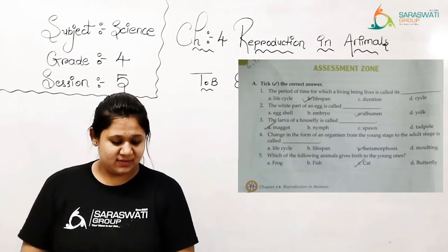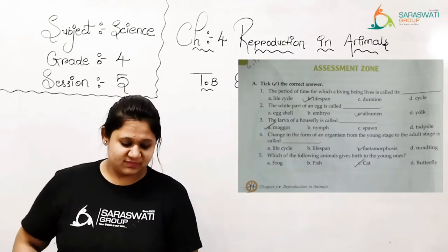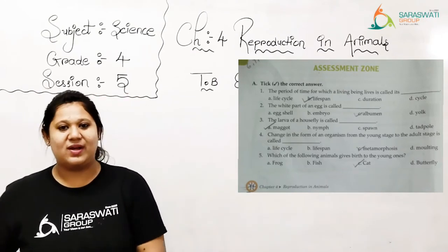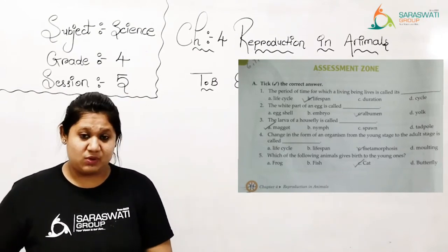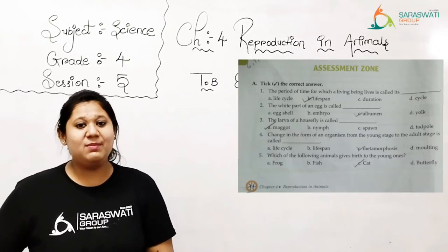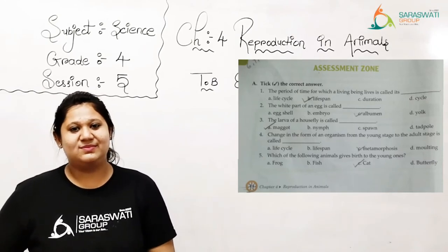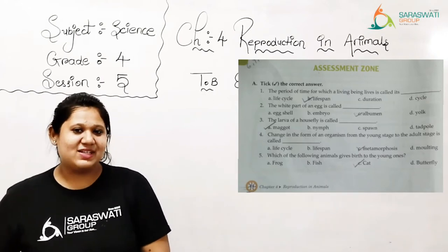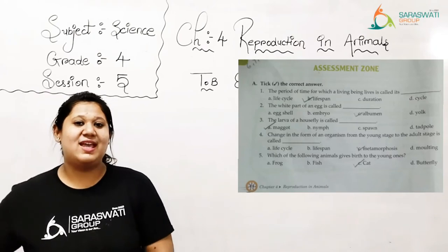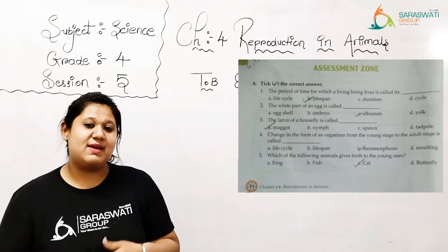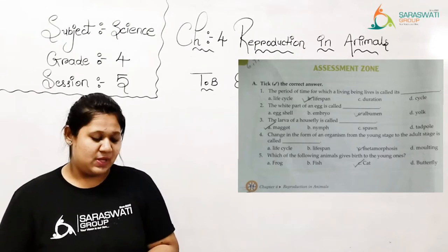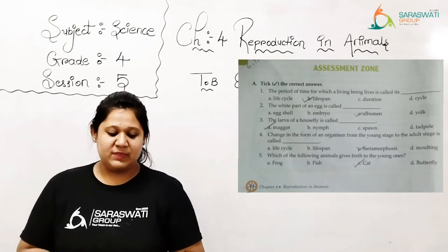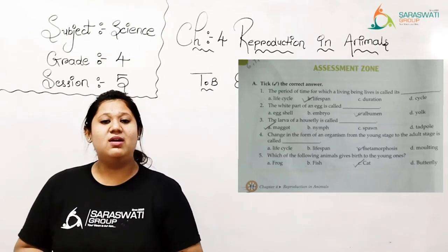Now last one, number 5: which of the following animals gives birth to the young ones? So easy. Frog, fish, cat, butterfly. Oh, so easy kids. Yes, our answer is cat. In these four options, cat is the only one which reproduces by giving birth, right? So we are supposed to tick on C. Done kids?